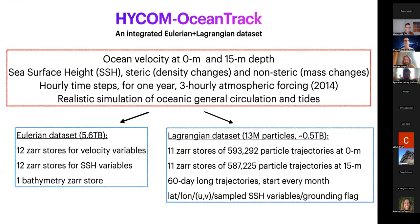Here's an example of the richness and content of this dataset, with details that matter to oceanographers. We have ocean velocity at the surface and at 15-meter depth. We have sea surface height with two components: a steric component due to changes in density, and a non-steric component due to local changes of mass. All variables are given at hourly time steps for a one-year integration of the HICOM model forced by three-hourly realistic atmospheric forcing from 2014. This is a state-of-the-art simulation that captures not only the oceanic general circulation but also the tides, barotropic and internal tides important for the ocean's overall energetics.